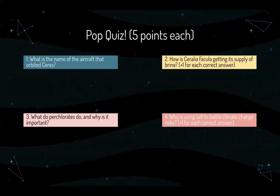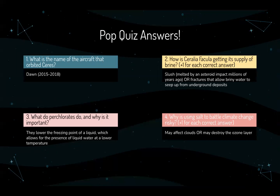On to the pop quiz. What is the name of the spacecraft that orbited Ceres? How is Cerealia Facula getting its supply of brine? What do perchlorates do and why is it important? And finally, why is using salt to battle climate change risky? The answers: the spacecraft is Dawn. Cerealia Facula gets its brine from slush melted by an asteroid impact millions of years ago, or from fractures that allow briny water to seep up from underground deposits. Perchlorates lower the freezing point of a liquid, which allows for the presence of liquid water at lower temperatures. And using salt to battle climate change is risky because it might affect cloud formation or destroy the ozone layer.